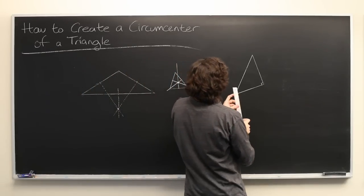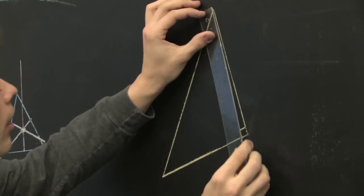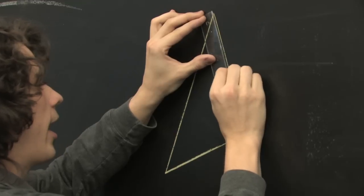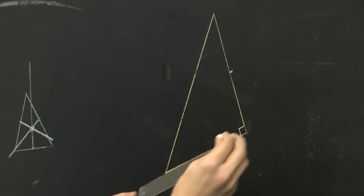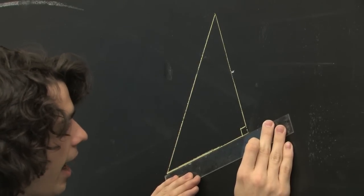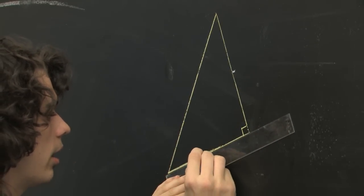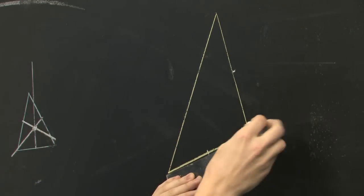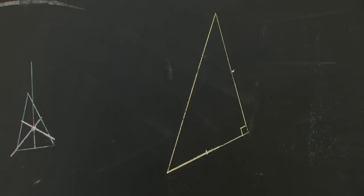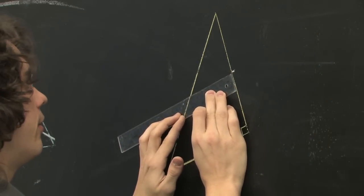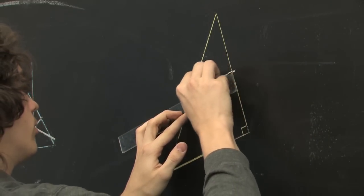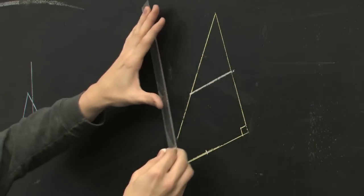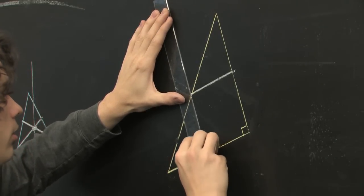Finally, we'll do this for our right triangle here. This side length is nine inches, so we'll mark it off at four and a half. This side length is eight and a half inches, so we'll mark it at four and a quarter. Then do the same thing that we did for the others — make a right angle and draw that line out, make a right angle and draw the line.